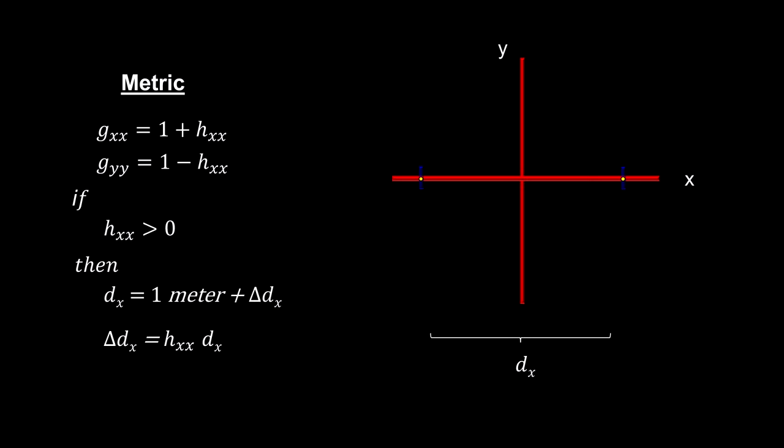When h is greater than zero, the distance between the two points on the x-axis becomes longer than one meter by an amount equal to h times the original distance. At the same time, a one meter distance on the y-axis will shrink to less than one meter by the same amount.